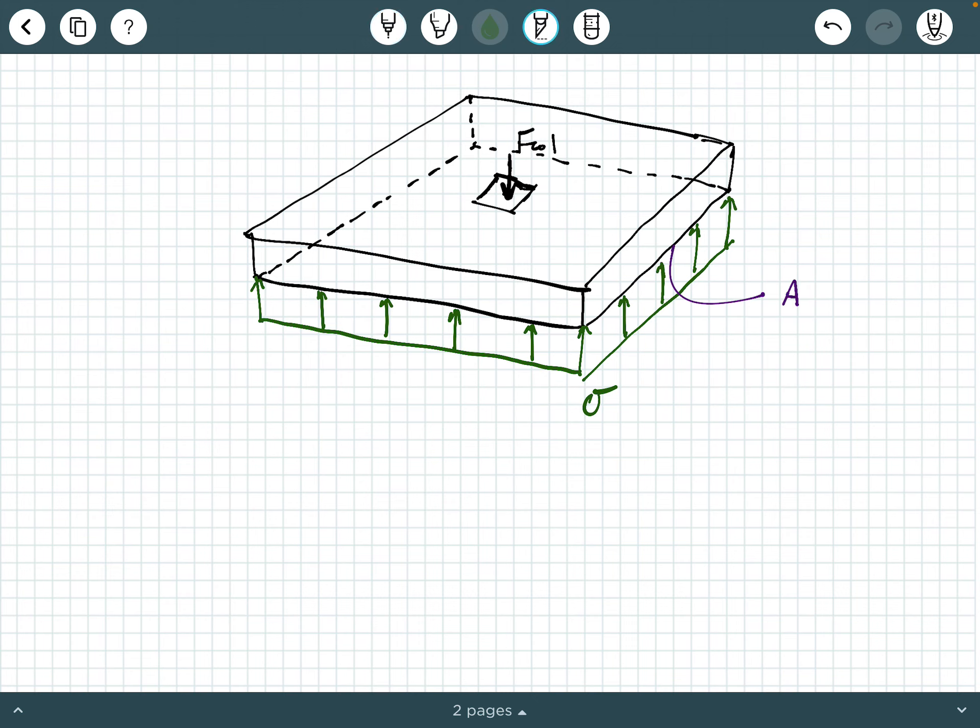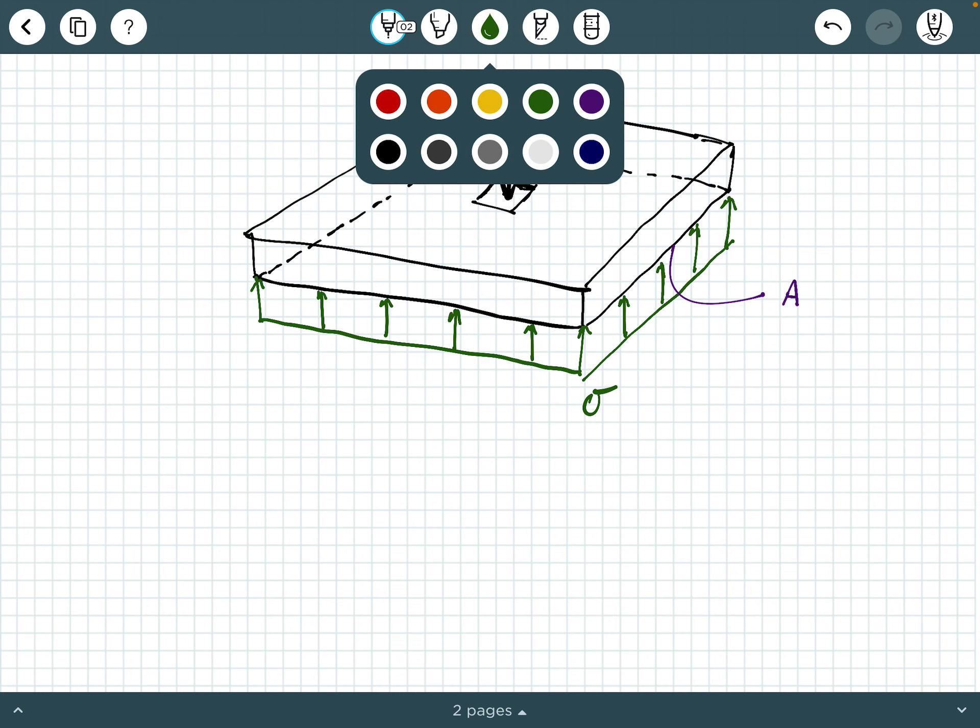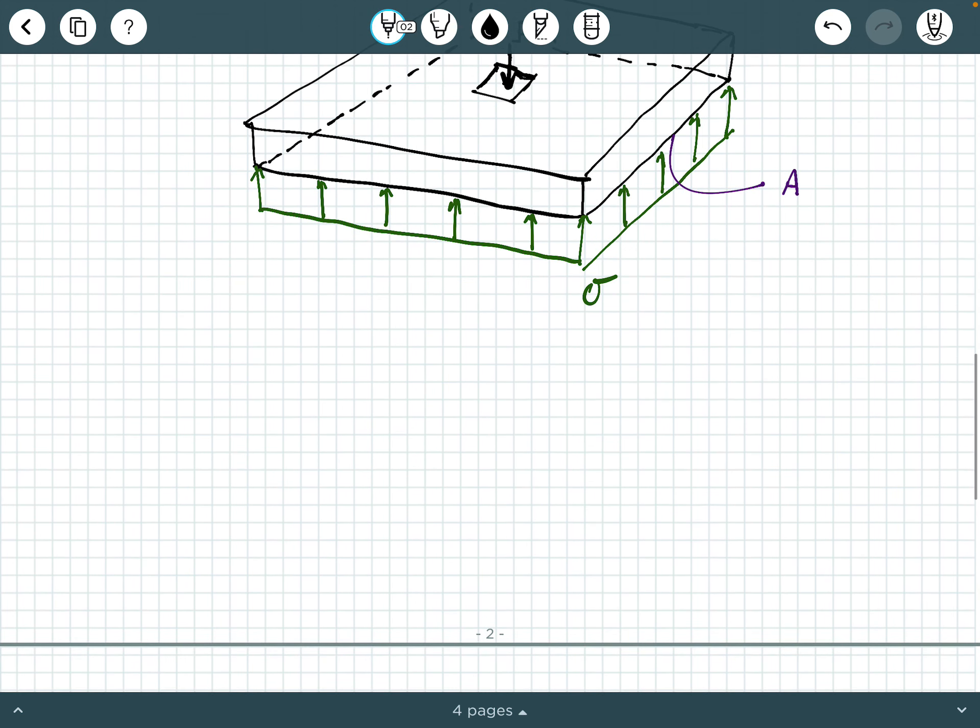Now, the question is, how do we calculate this applied bearing pressure from this column force, F call? Well, it's as simple as what you've learned in mechanics and materials or maybe even statics. It's applied bearing pressure sigma is just going to be the column force, which is F call, divided by that plan area or that base area A. So it's just force divided by area, F over A.